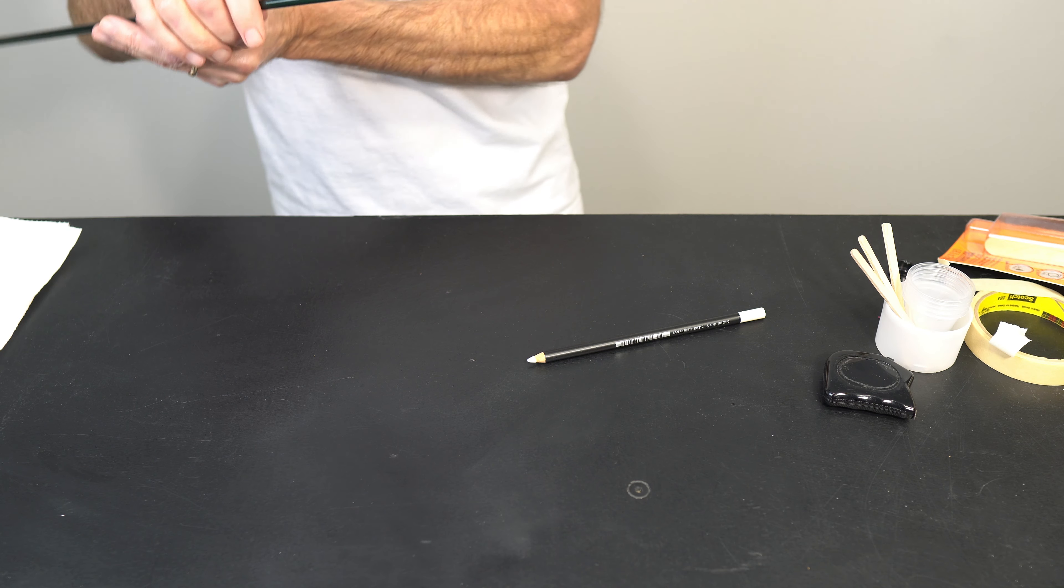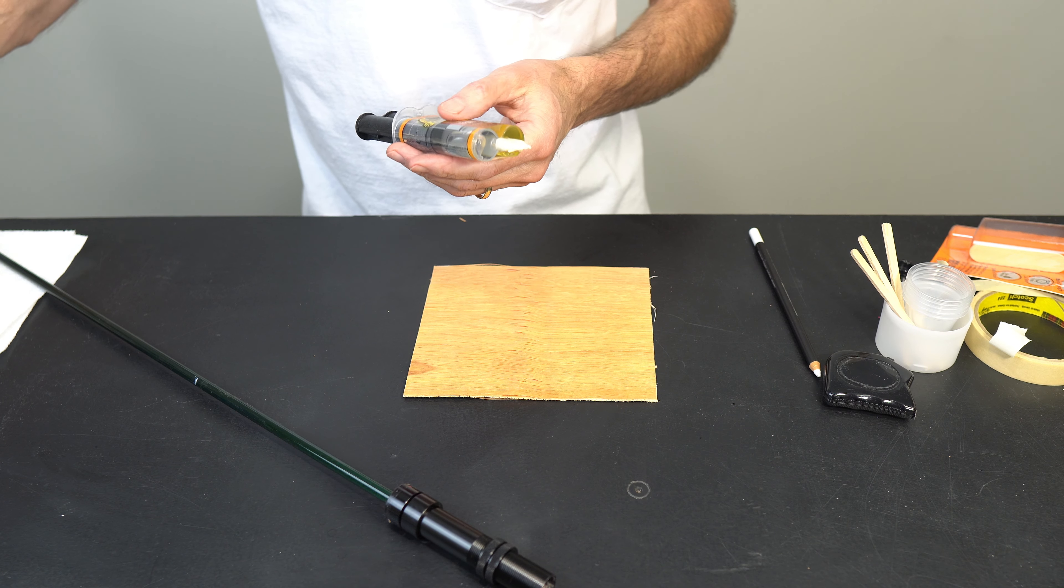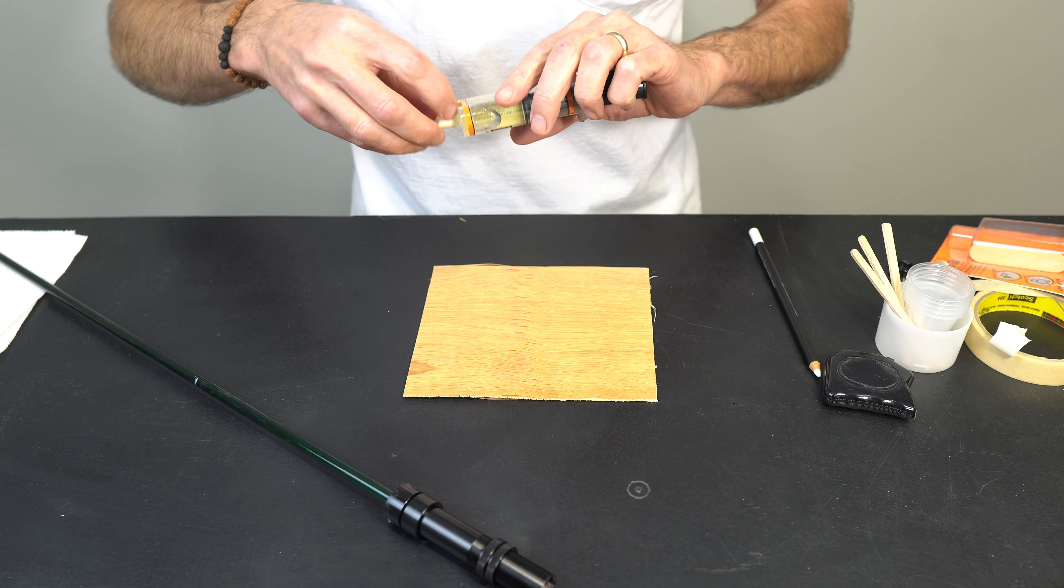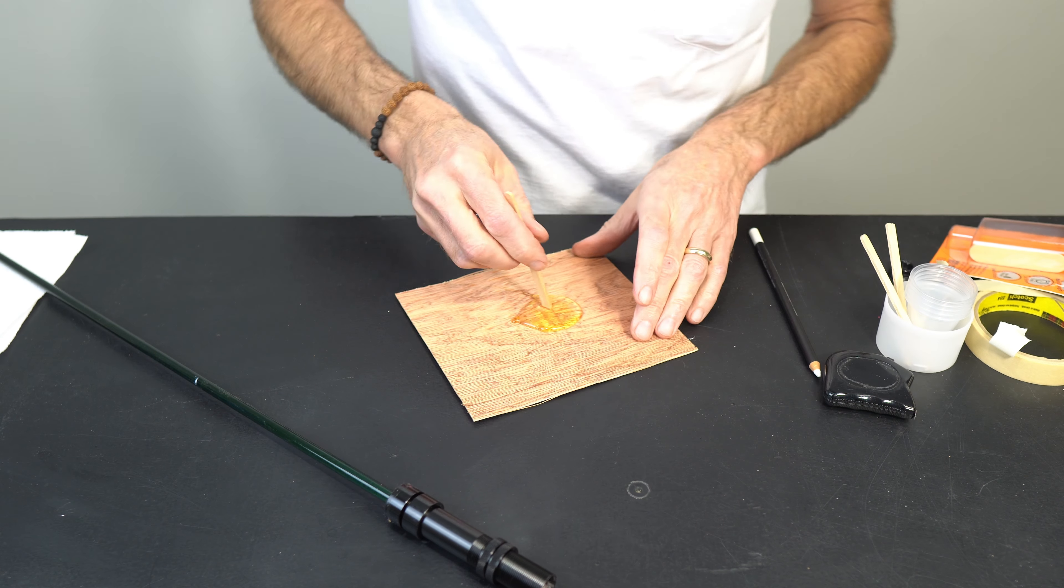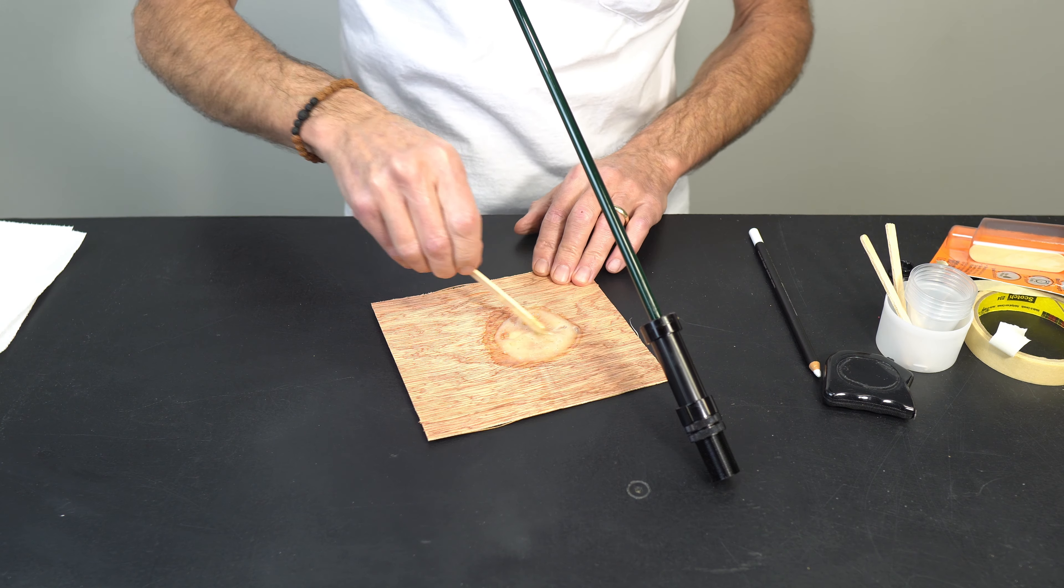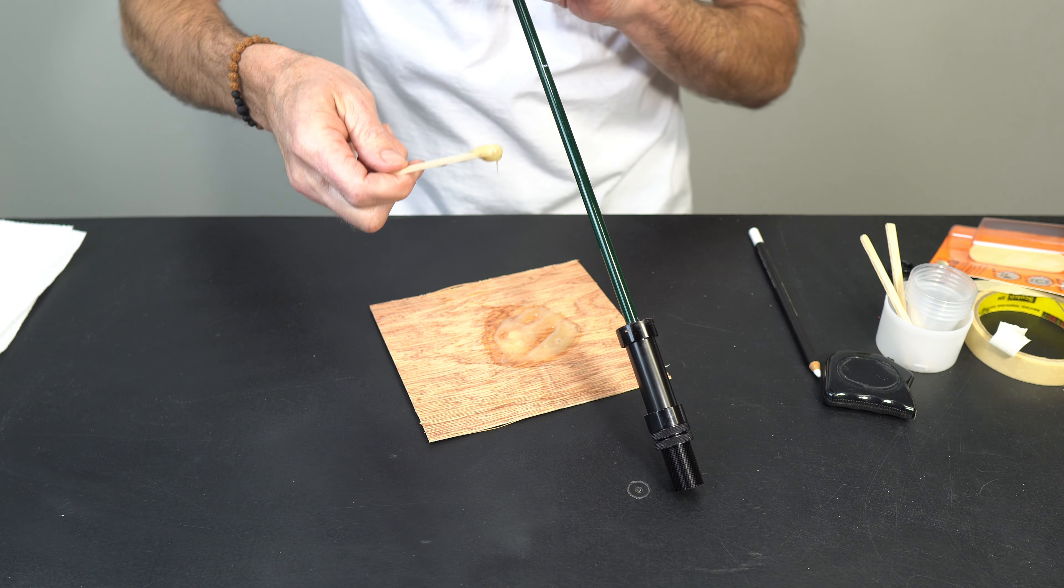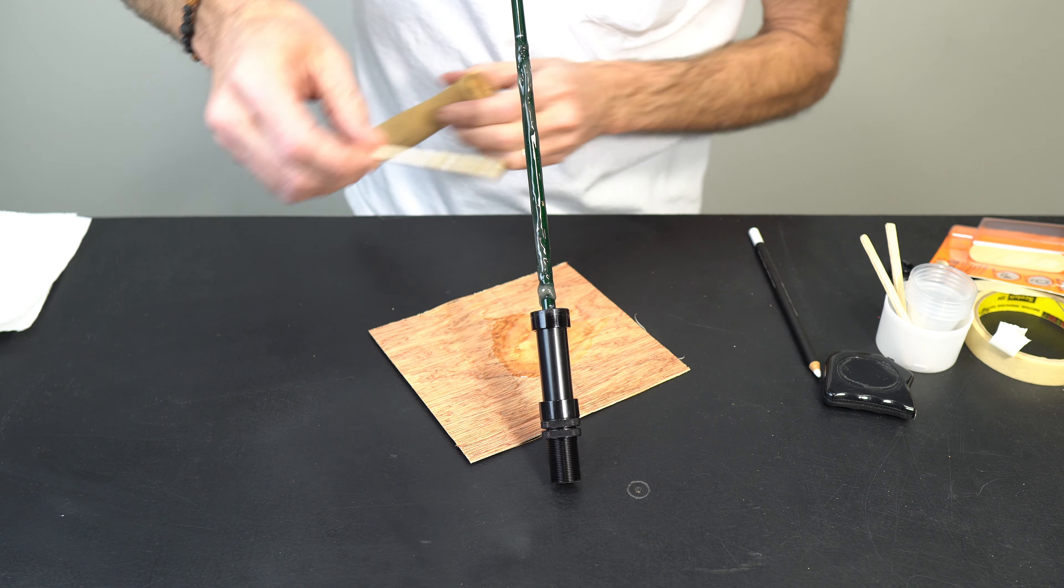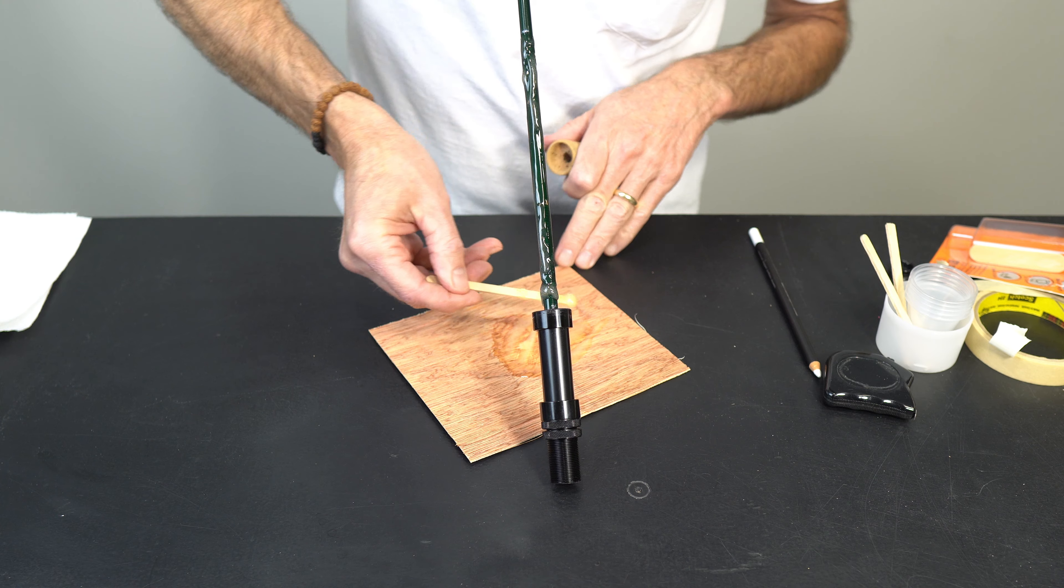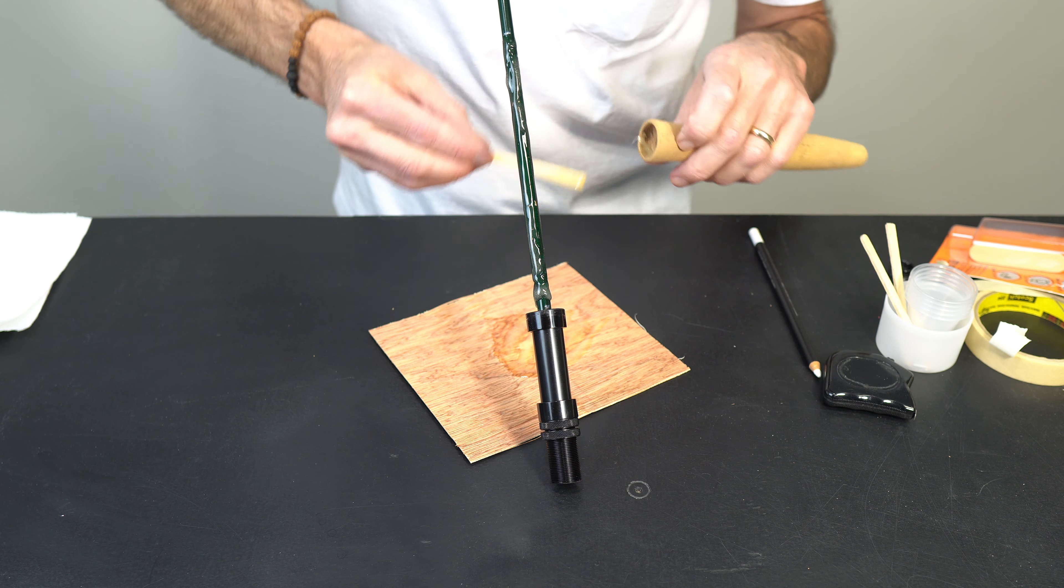We're going to dry fit our grip one more time, make sure it'll go on nice. It does. Quickly mark the top of the grip. It's time to mix up some more epoxy. It's always good to have your acetone close by when you're doing this. You want to keep everything nice and clean. We're just going to do a nice smooth coating from our mark down, just to keep this good and strong. A little bit inside my hood.